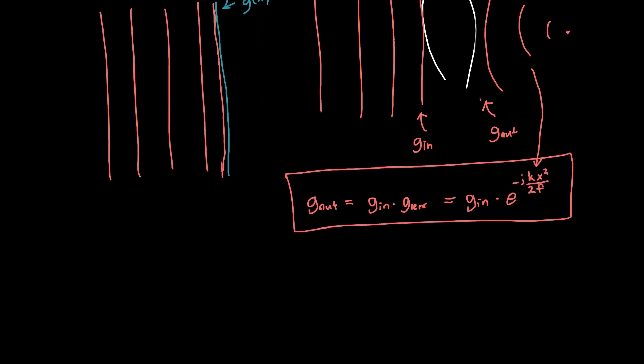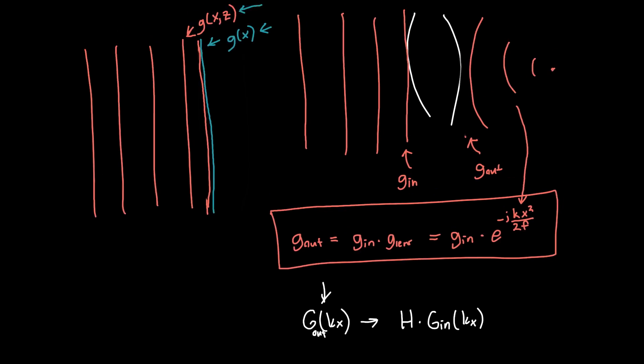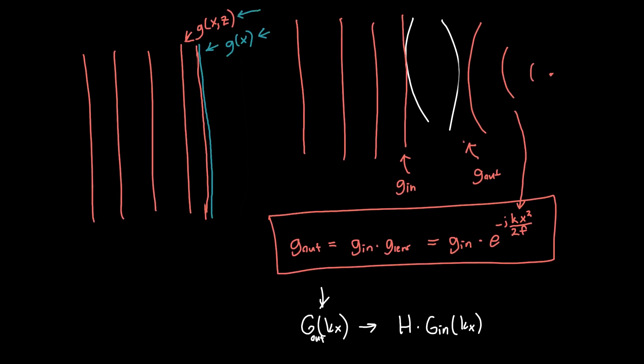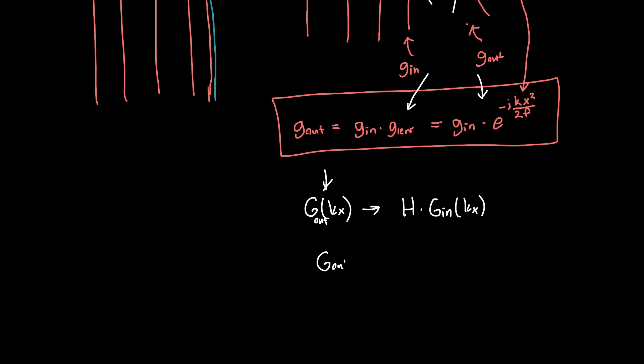Now you might want to ask, how does this lens behave with the angular spectrum? What happens if I feed it in some g of k x? Can I just multiply by some transfer function? Let's call this g out. Can I just multiply by some h, by my g in? In this case, no, because a lens is performing multiplication in space. So in frequency, or spatial frequency, we would actually need to perform a convolution.